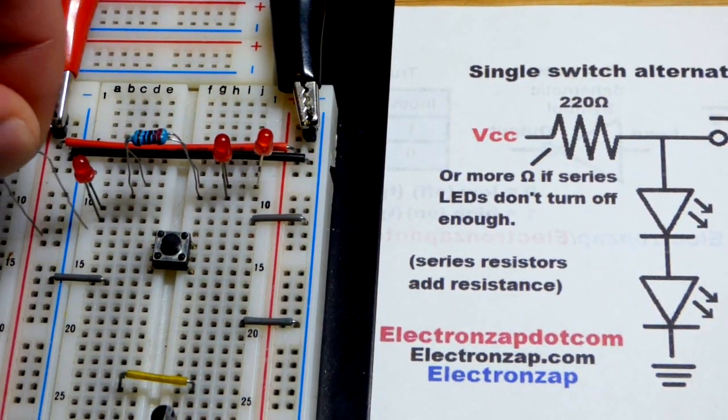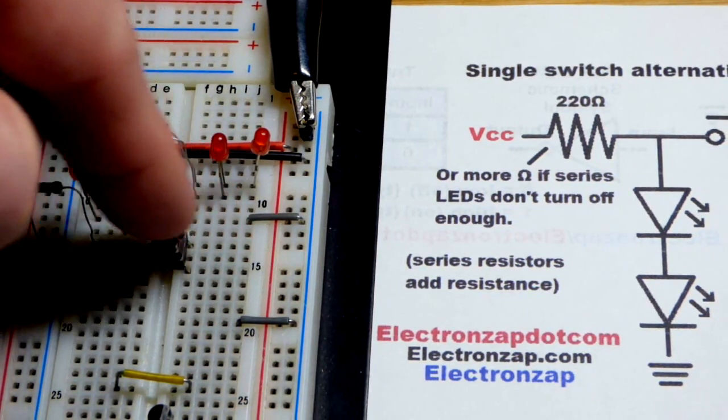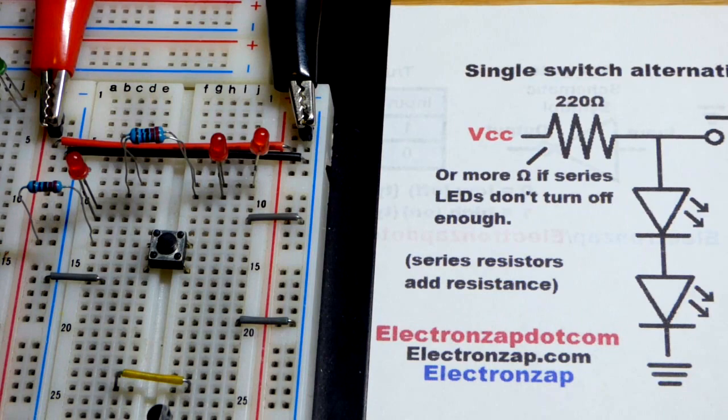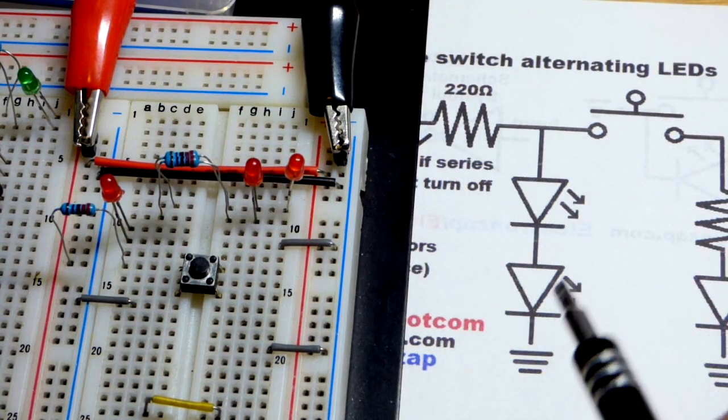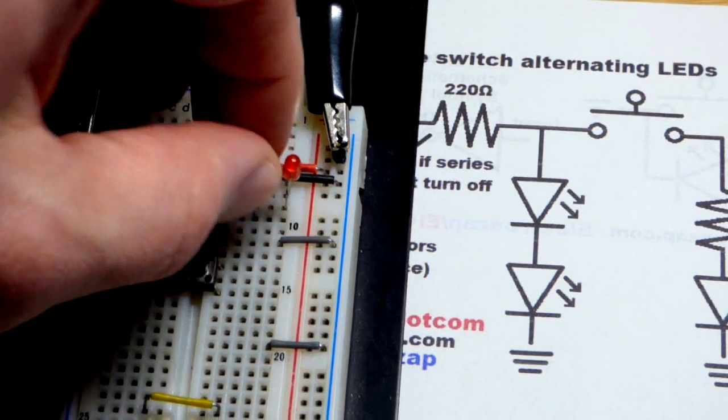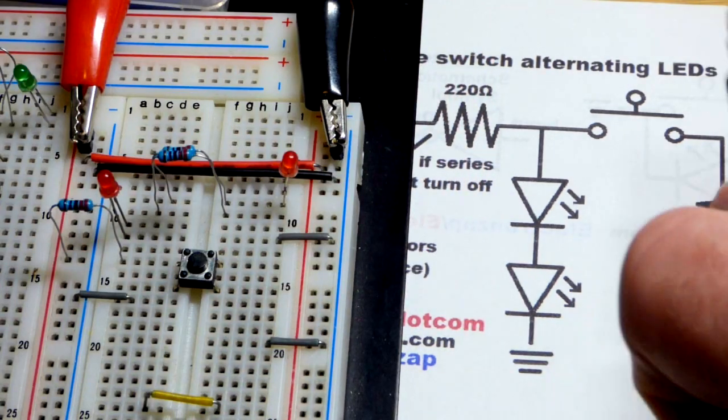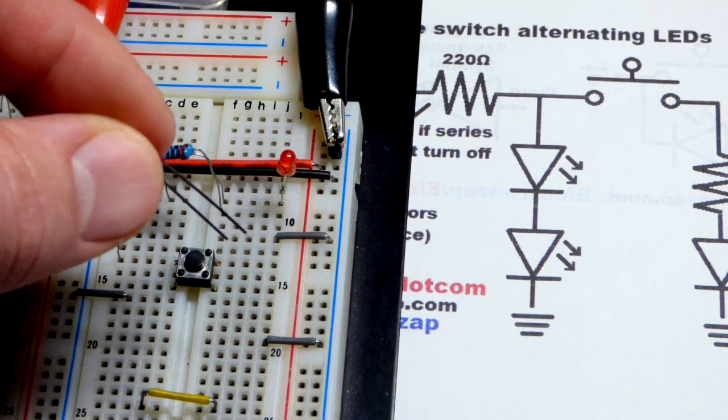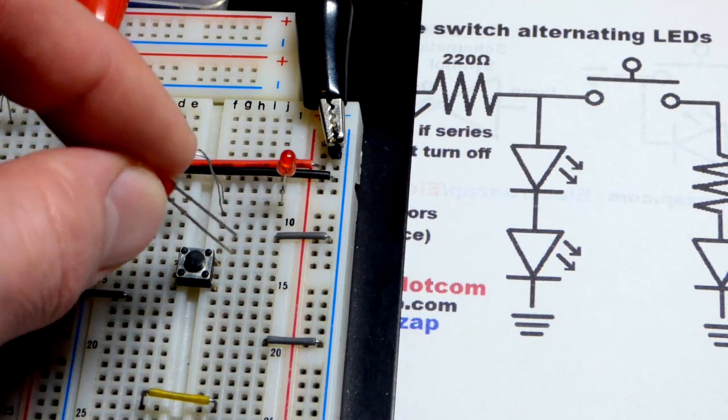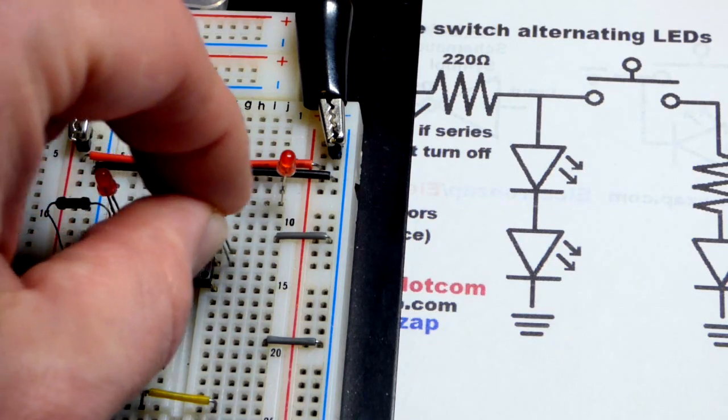I'm going to grab a 220 ohm positive to the top of the switch. Remember, the top of the switch, those two pins are always connected together. So now we have the two LEDs. So we're going to put them in series with the resistor. And I have this jumper going to the negative rail. You can see that they head down to ground, which is the negative rail with a DC supply.